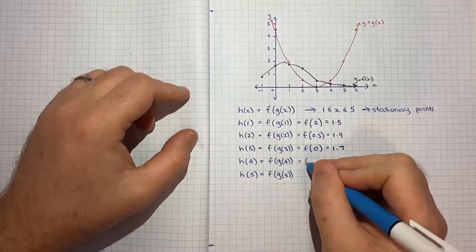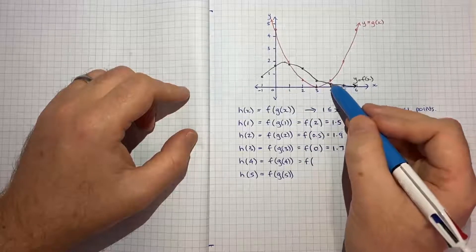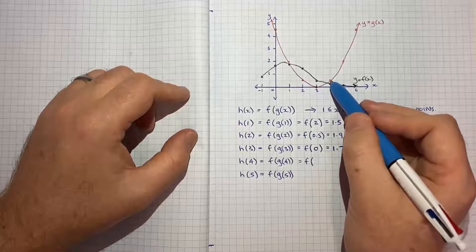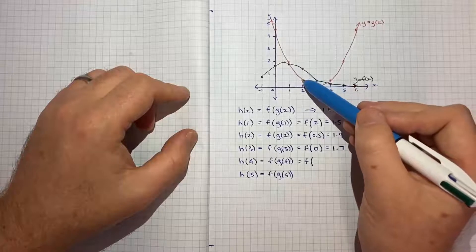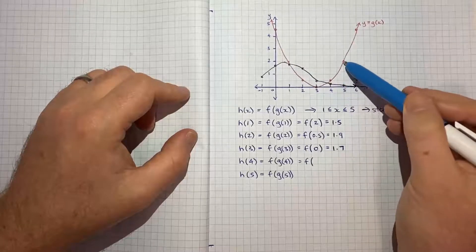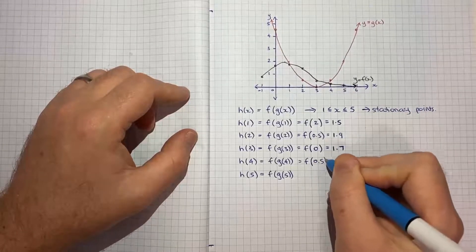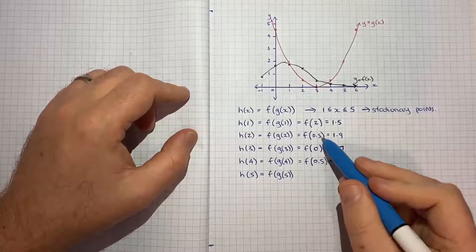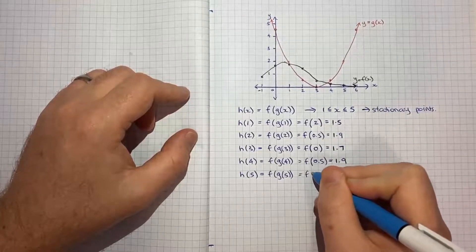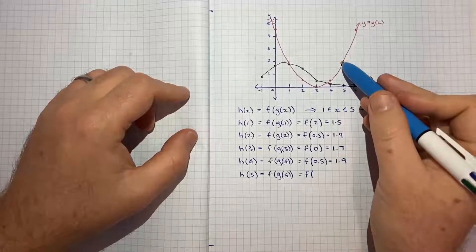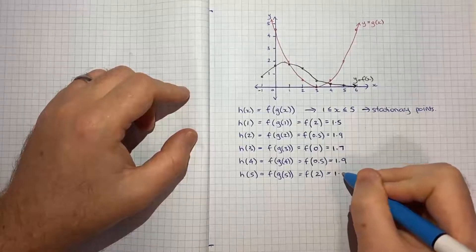h of 4, so this will be f of when x is equal to 4, g of x is equal to half again. And notice this is a parabola. So what I've just done for 1 and 2, I'll really get the same outcome for 4 and 5 because the parabola is symmetrical. So that's not surprising to get the half. f of a half I already worked out is 1.9. And then at x is equal to 5, g of 5 is going to be 2. f of 2 I already worked out is 1.5.